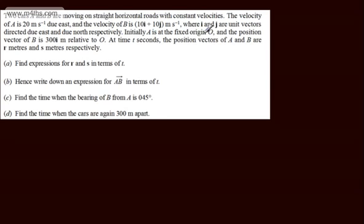Initially, A is at the fixed origin O, and the position vector of B is 300i meters relative to O. At time t seconds, the position vectors of A and B are r meters and s meters respectively.